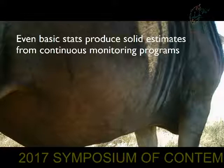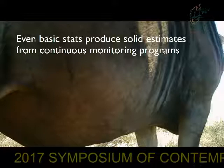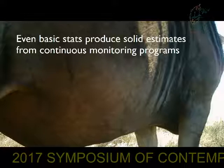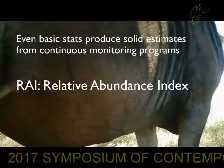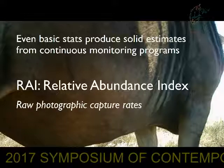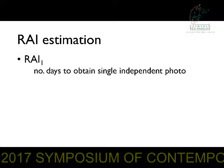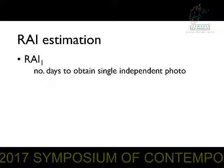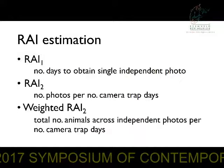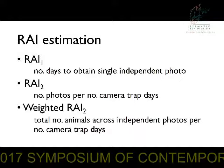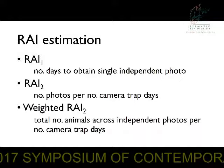Despite these difficulties, I'm here to demonstrate that even basic statistics can produce very solid abundance estimates from continuous monitoring programs, although there are more refined techniques for unmarked animals that I'll also touch on briefly. The simplest and easiest to implement estimator would have to be the relative abundance index — many of you have probably used this if you have camera traps. This is just the raw photographic capture rates from your camera trap survey. There are a number of variations: the number of days to capture a particular species, the number of that species per certain number of days, or the number of animals in each picture for a certain number of days. This produces an index, which you then have to calibrate to produce a population estimate.